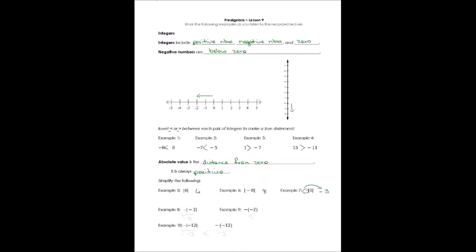Example eight is sort of the same thing. First, I'm going to resolve what's inside absolute value. Absolute value of negative two is a positive two. But this negative that's out front, I can't forget about it. So my answer to number eight is negative two.